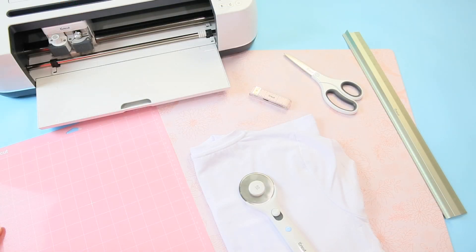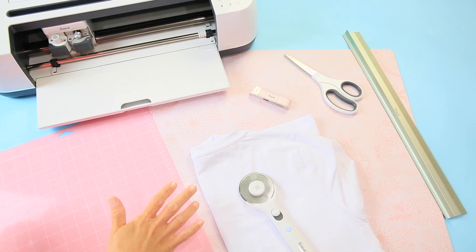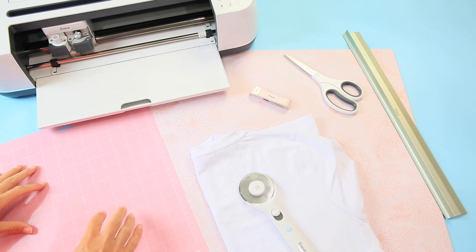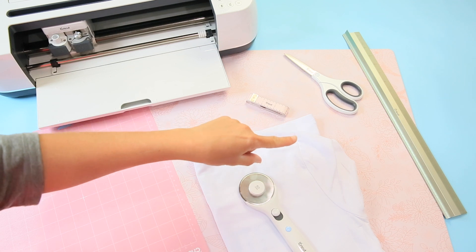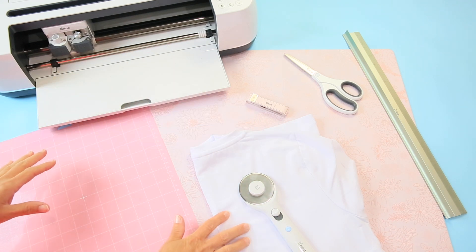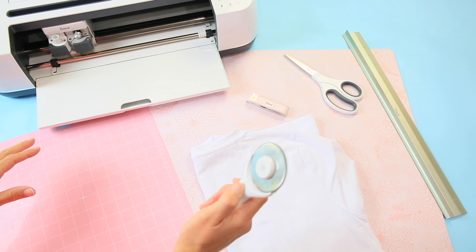Okay so here we are on the craft table and so let me show you what I'm working with today. So I have my Cricut Maker. I have a pink mat. So this is the fabric grip mat. I have my measuring tape. I have my scissors. I have a straight edge and this is my t-shirt and then I have a rotary cutter.